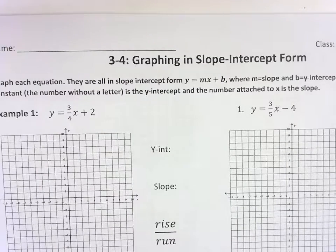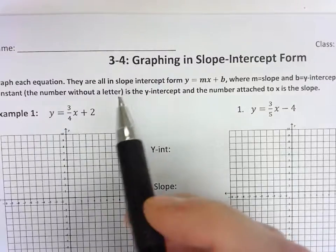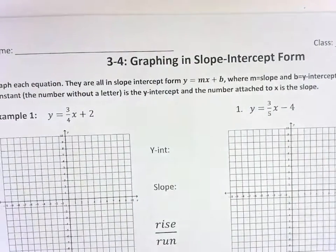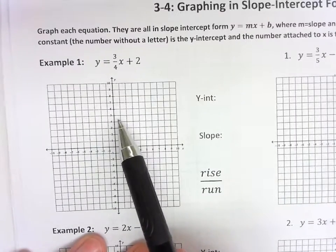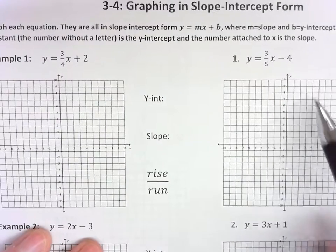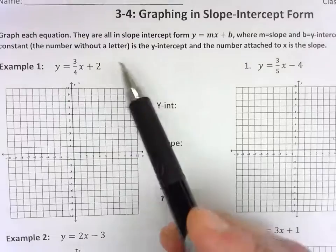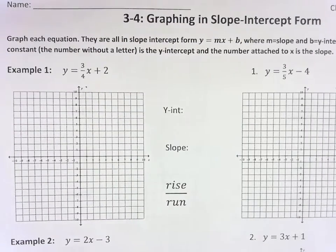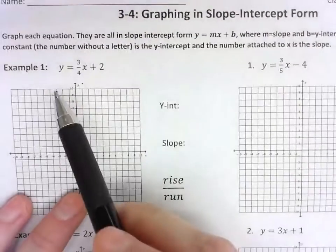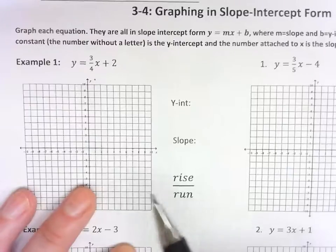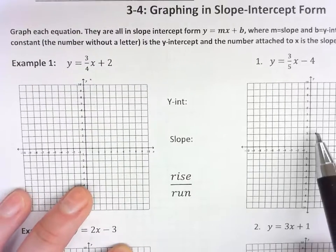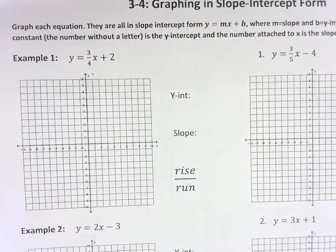Alright, lesson 3-4, graphing in slope intercept form. If you need to, you can go back to your notes from 3-3 for more detail. I'm going to work an example problem, and then one of the homework problems is right next to it. They have the same type of slope, so you can see how these should move together. In order to get full credit, you do need to graph the example question and the one right next to it. I'll do the examples with you, then you can go through and do the rest of the problems on your own.